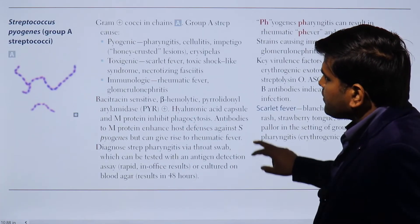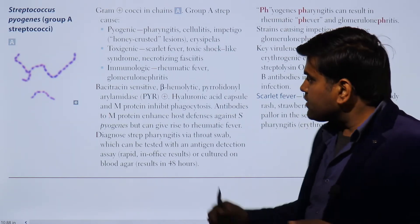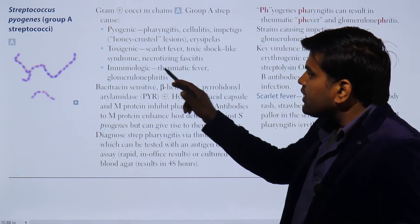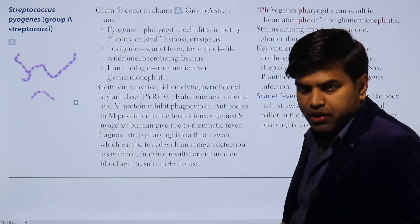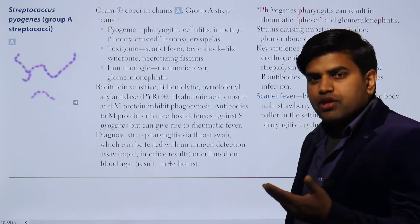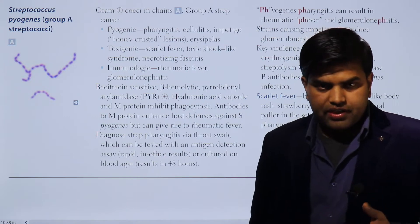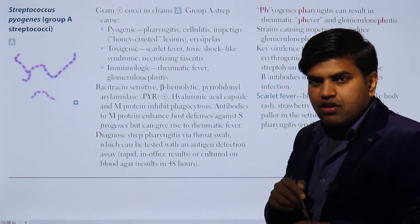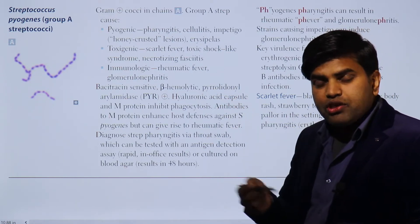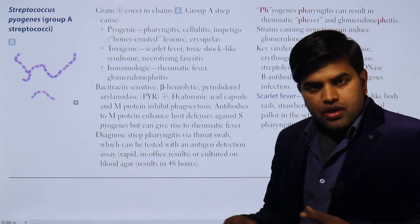Streptococcus pyogenes is a very important bug because it is responsible not only for pyogenic infections or toxin-mediated infections, but also for immunological disease. If a patient develops a pharyngeal sore throat, then after two to three weeks they can develop rheumatic heart disease. If it is a skin infection caused by Streptococcus pyogenes, it will not be responsible for rheumatic heart disease.